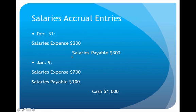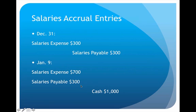Then in the next accounting period, on Friday January 9th — the actual payday — we do a second, more complex compound journal entry with more than two lines. We debit salaries expense for $700, debit salaries payable for $300, and credit cash for the entire $1,000. Looking at these two journal entries side-by-side, even though one is in December and one is in January, it more clearly illustrates what we're doing.